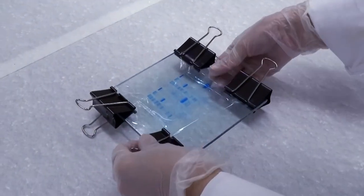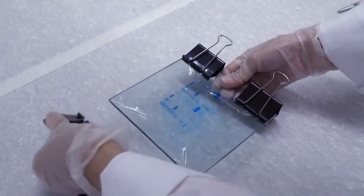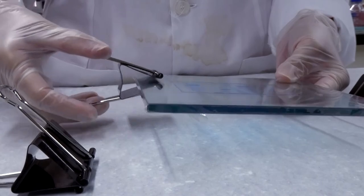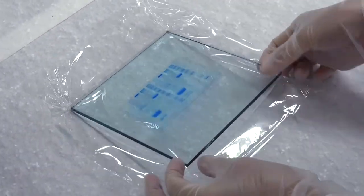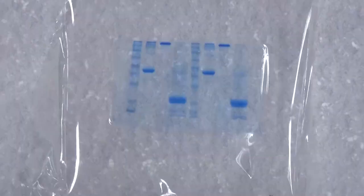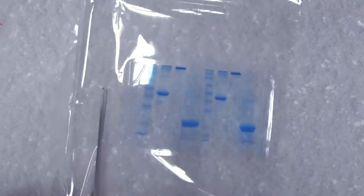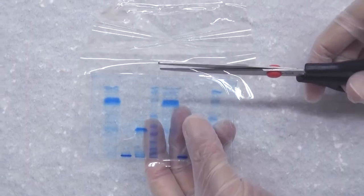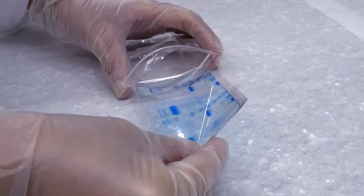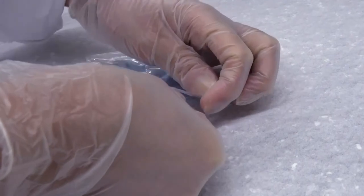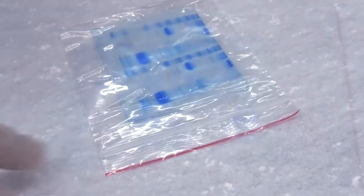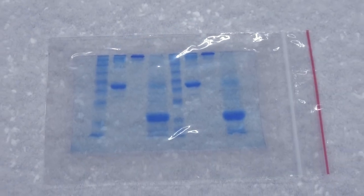After one to two days, the gel will be dry and ready to be removed. Cut unwanted food wrap around the gel with a pair of scissors. Put the gel into a ziplock bag for long-term storage. Your gel has been sealed and stored.